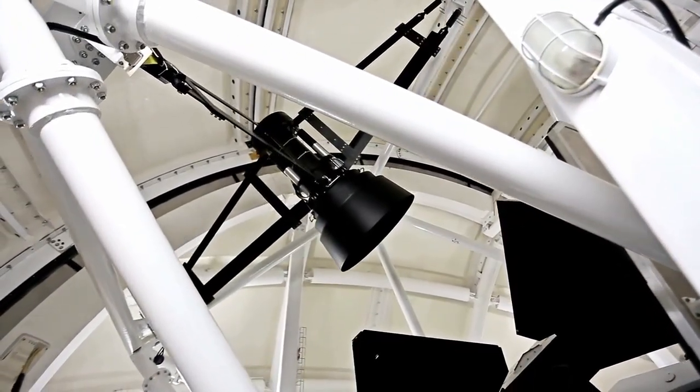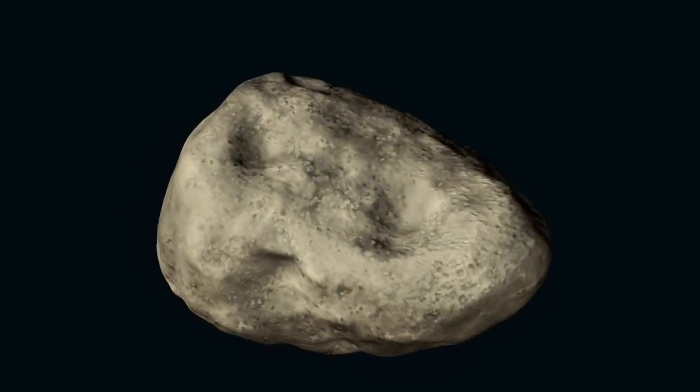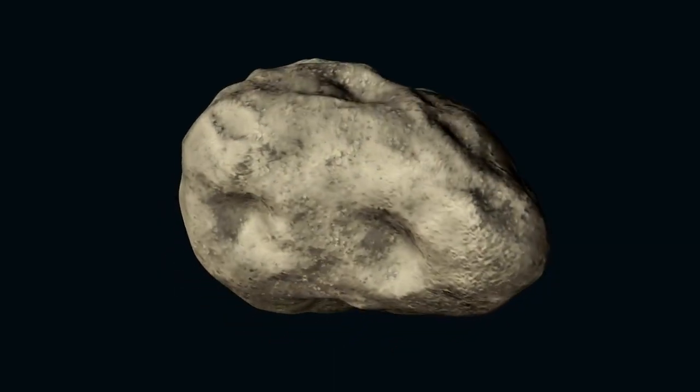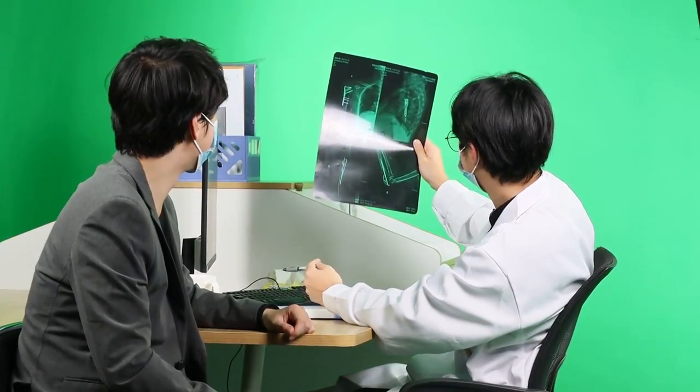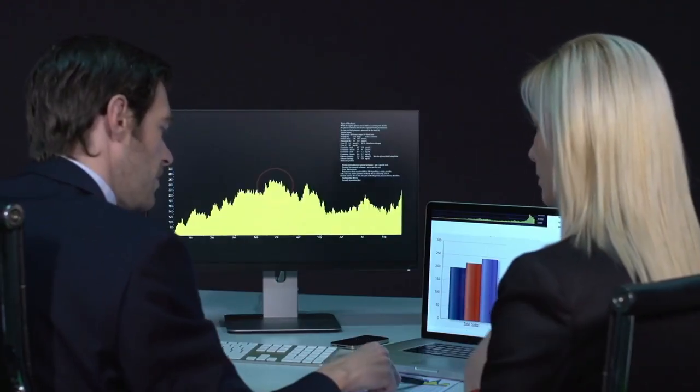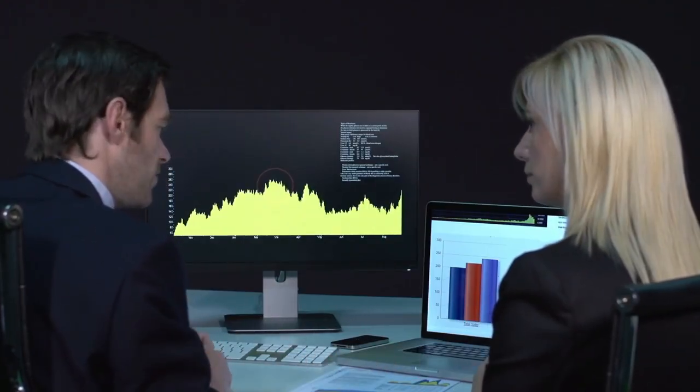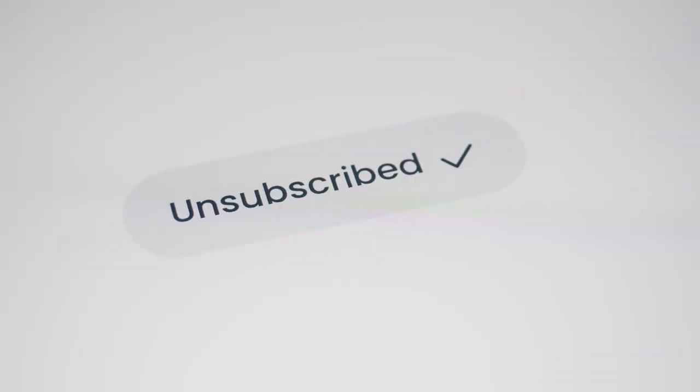A fast-moving object the size of Manhattan is hurtling towards our solar system, and it will make its closest pass to Earth on December 17th. Comet, asteroid, or something else? A Harvard astrophysicist believes there's a strong likelihood this is a craft of alien origin, and the implications for humanity would be profound. It may not be a rock. It is called 3i Atlas.